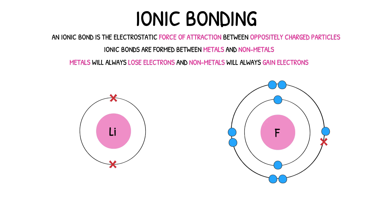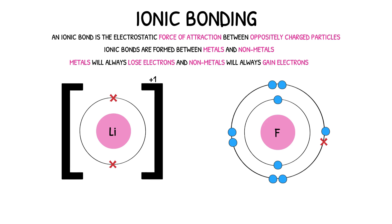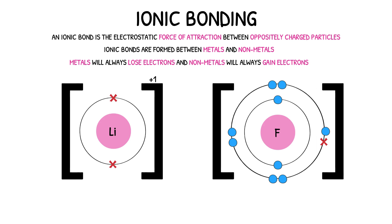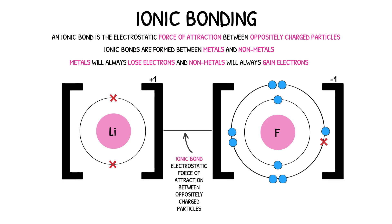As lithium has lost an electron, it now becomes a cation with a plus-one charge. We use brackets to indicate that the particle is charged, and place the charge of the particle outside of the bracket. We do the same here for fluorine, which has gained an electron, and is now an anion with a minus-one charge. There is now a natural attraction between these two particles, as they are oppositely charged. This attraction is the ionic bond.